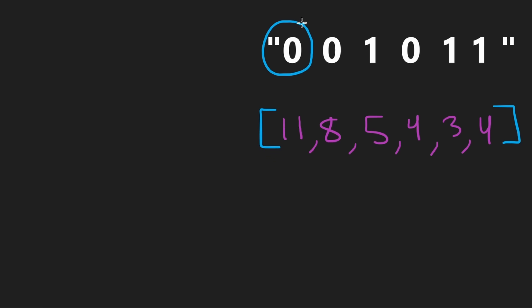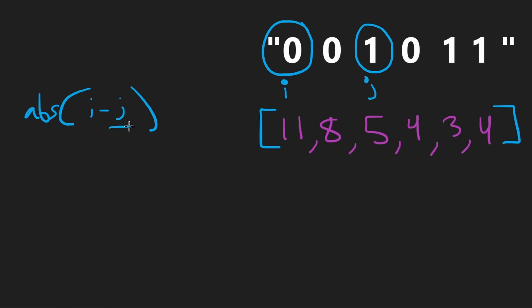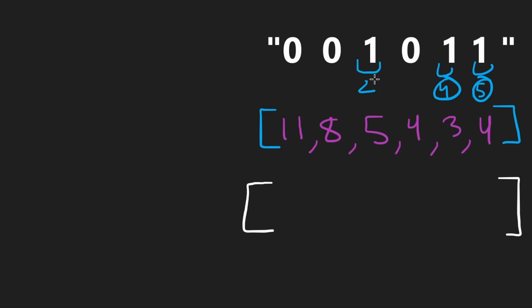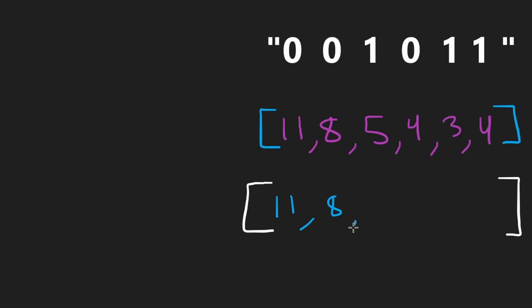Specifically, we're going to focus on the repeated work element. What would the brute force look like? To fill in a given spot, we scan over everything else. Every time we see a one, we calculate the distance — call that index j, and this index i. You take the absolute difference between i and j and add that to the current value we're populating. Whether the current position itself is a zero or a one, it's not relevant — it doesn't change the number of moves.